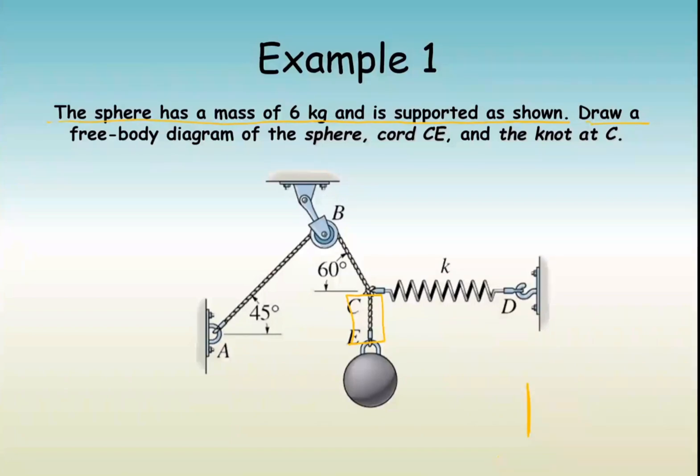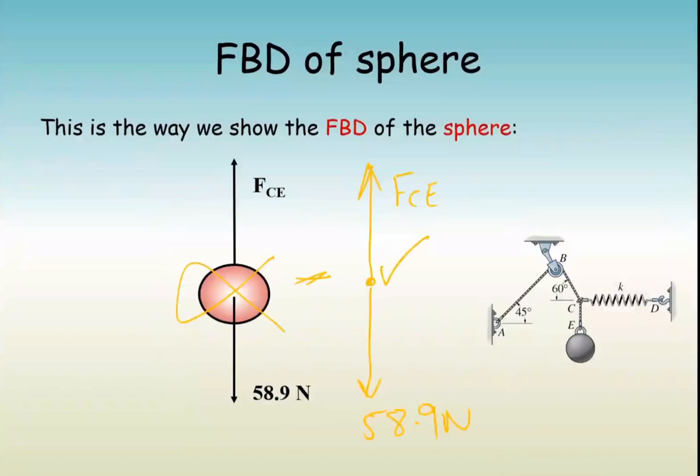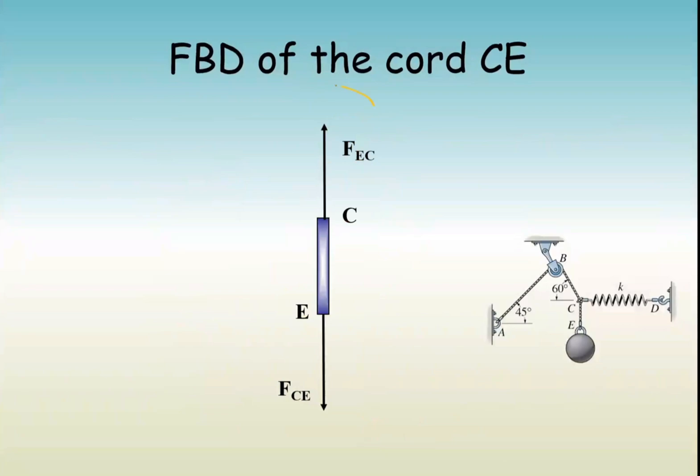That's my chord. Chord is always in pull condition. There's no push. So I've got force up and force down. This is the free body diagram of your chord. I cut it off from the surrounding.